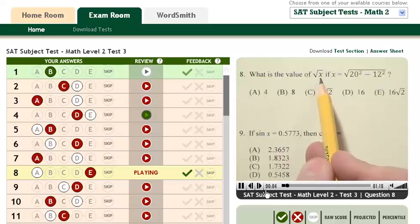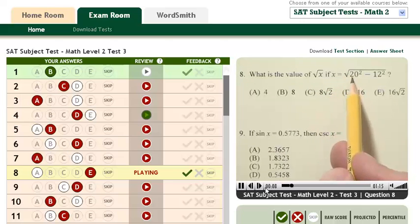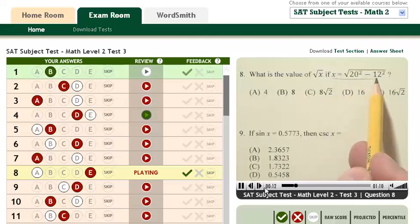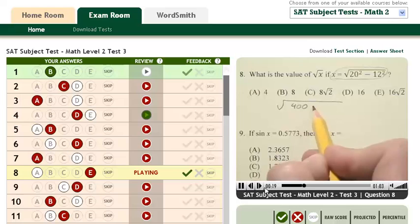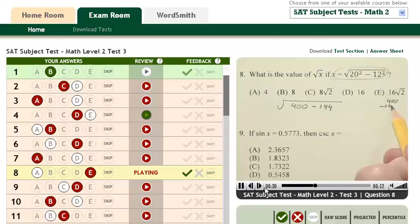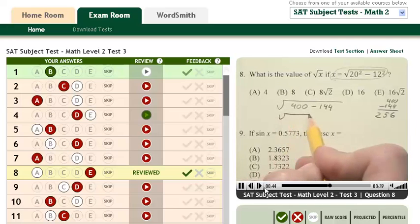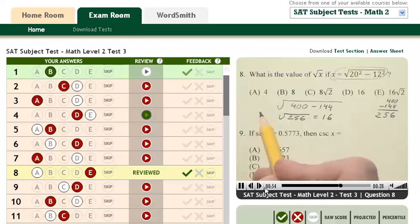What is the value of the square root of x if x is equal to the square root of 20 squared minus 12 squared? Well, let's work on this first. The square root of 20 squared equals 400 minus 12 squared equals 144. So if over on the side here you do 400 minus 144, you're going to have to borrow. You're gonna get a 6 here, a 5 here, and a 2 here, so you're gonna have 256. Now the square root of 256 is equal to 16.